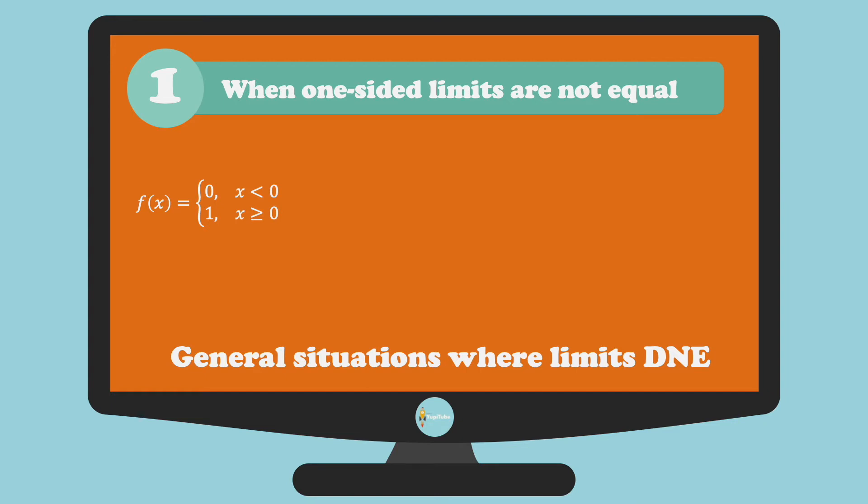Take a look at its graph. The left hand limit of the function as x approaches 0 is 0, while its right hand limit as x approaches 0 is 1.